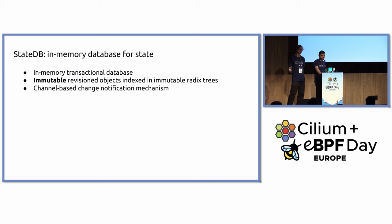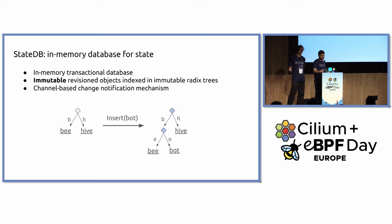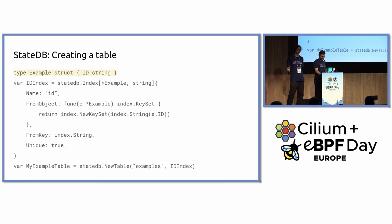There's a channel-based notification mechanism which tells us when something changes and can allow us to wake up the reader and do more work. Internally it uses a radix tree — things are prefix-indexed so a search does a bitwise lookup. On modifications, you do a clone of the changed part of the tree, so existing readers are never affected when you're inserting something.